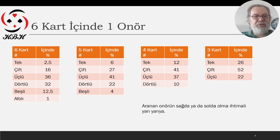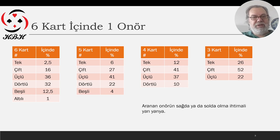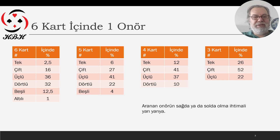Beş kart içinde durum ne? Tek parça yakalamamız onörü — dışarıda beş kart varken, yani sekiz kart bizim tarafta — beş kartın tek parça yakalama ihtimalimiz yüzde altı. Çift olma ihtimali yüzde yirmi yedi, üçlü olma ihtimali yüzde kırk bir. Zaten rakamlar tanıdık gelecek: üç-iki dağılıp dışarıda beş parçada altmış sekizde; yirmi yedi ve kırk bir olarak dağılmış. Dört parça yüzde yirmi iki, beşli yüzde dört. Sağımızda onör tek parça çıksın diye ümit ediyorsanız, bunun anlamı sadece yüzde üç.